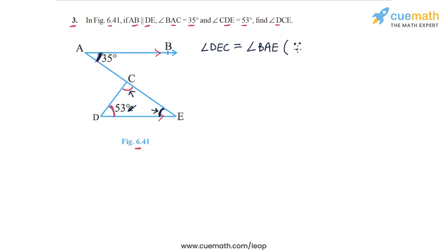Because these two angles are a pair of alternate interior angles on AB and DE as parallels and AE as the transversal. Just so you are clear, the transversal is this segment AE, and the alternate interior angles DEC and BAE are created.